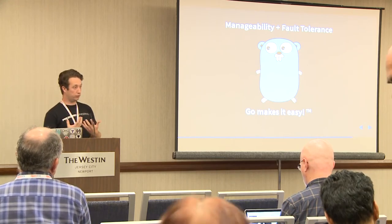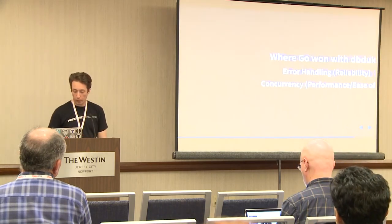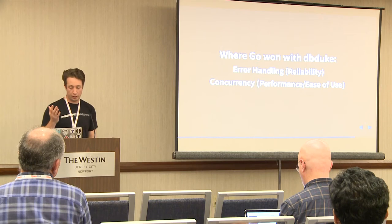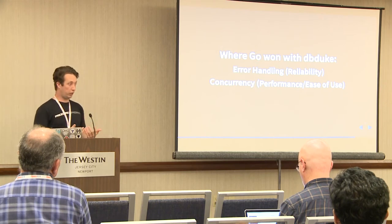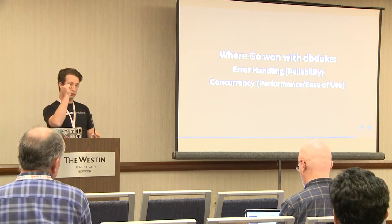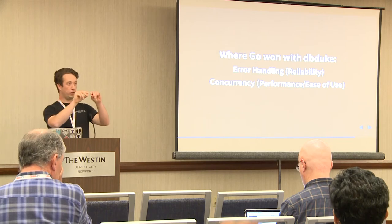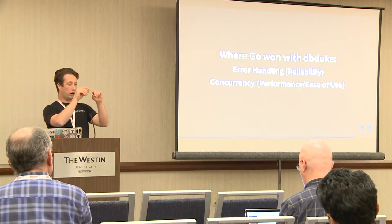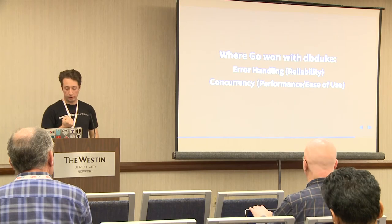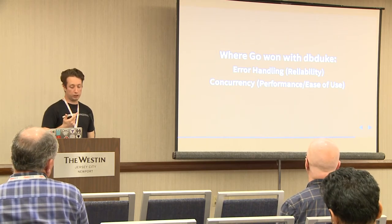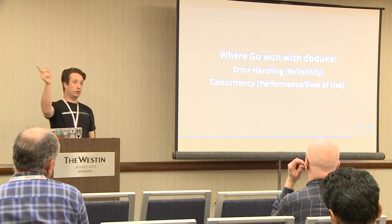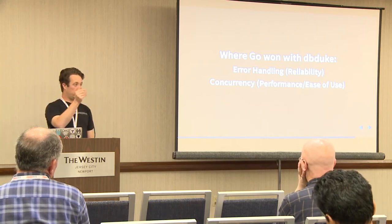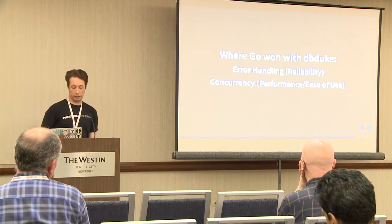Where did Go win with DB Duke? Error handling was a huge piece for reliability — going through these state transitions, you can directly see it at every line of code: if there's a potential error that can occur, capture it and handle it explicitly. And concurrency was a big piece for ease of use when wanting to do background jobs — you just put the keyword 'go' and it runs in the background.